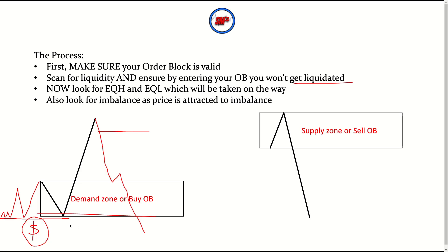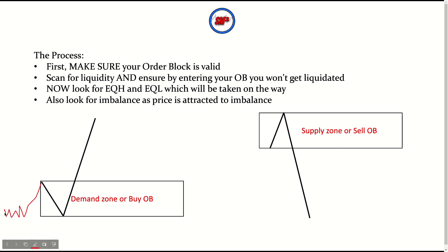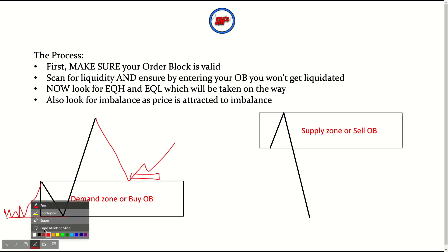The key thing you want to do is avoid getting liquidated by making sure there is no significant support at your order block. Maybe if there's just one tap slightly above it, that's fine — not too concerning. But if at your buy order block you've got a full-blown support level with people waiting for a double-bottom, you shouldn't be entering that order block, or you should be looking for a lower time frame confirmation instead.